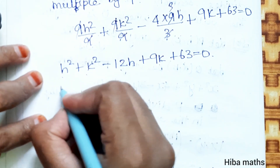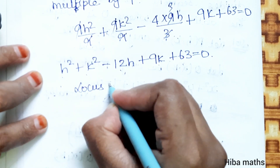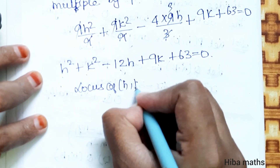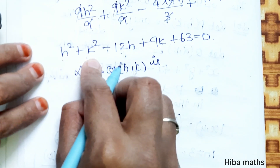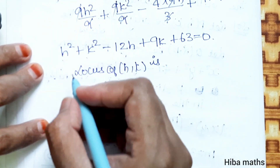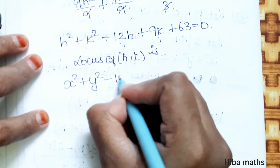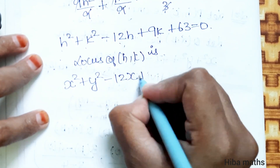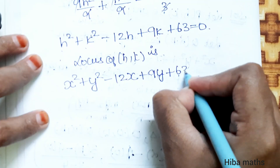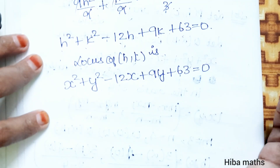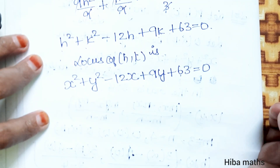Therefore, the locus of P, replacing h with x and k with y, is x² + y² - 12x + 9y + 63 = 0. This is the answer. Thank you so much for watching.